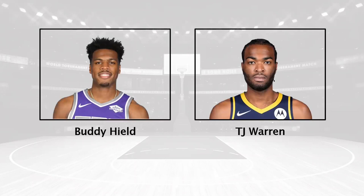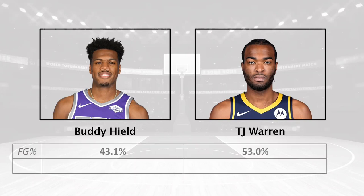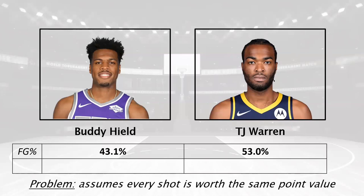Let's take an example. Assume you wanted to compare two players: Buddy Hield and TJ Warren. You might want to know how well they shoot, and if you just looked up their field goal percentage, you'd be inclined to think that TJ Warren is a way better shooter than Buddy Hield — after all, his field goal percentage is nearly 10 percent higher. But remember the problem with field goal percentage: it assumes that every shot is worth the same point value.